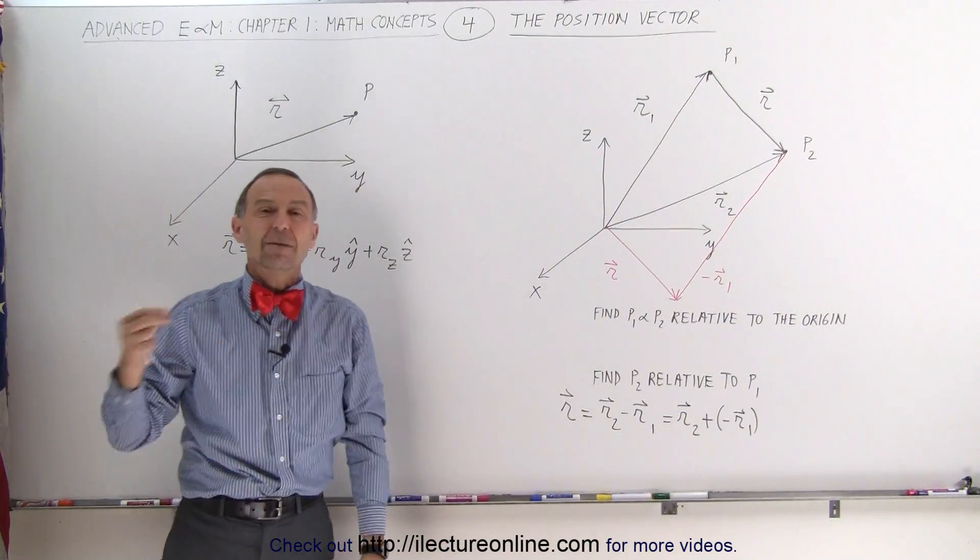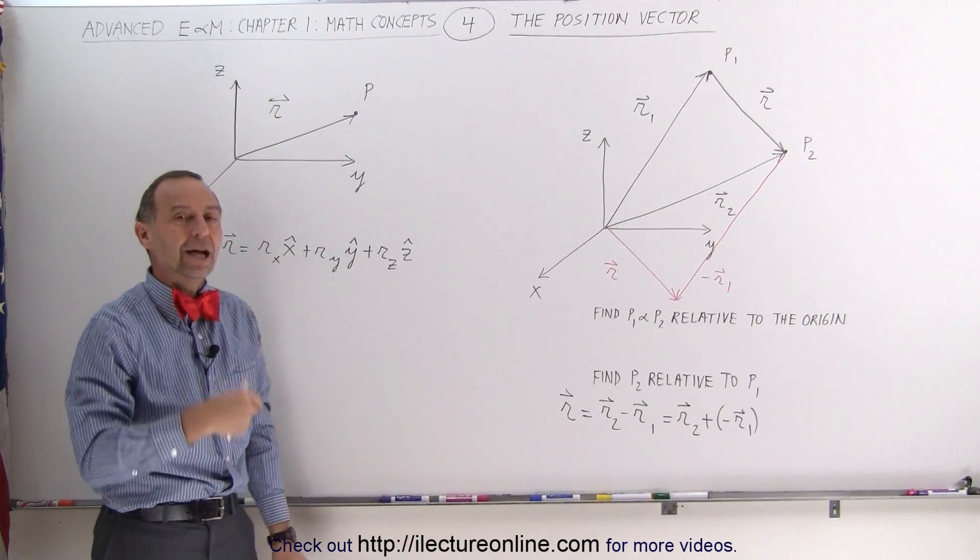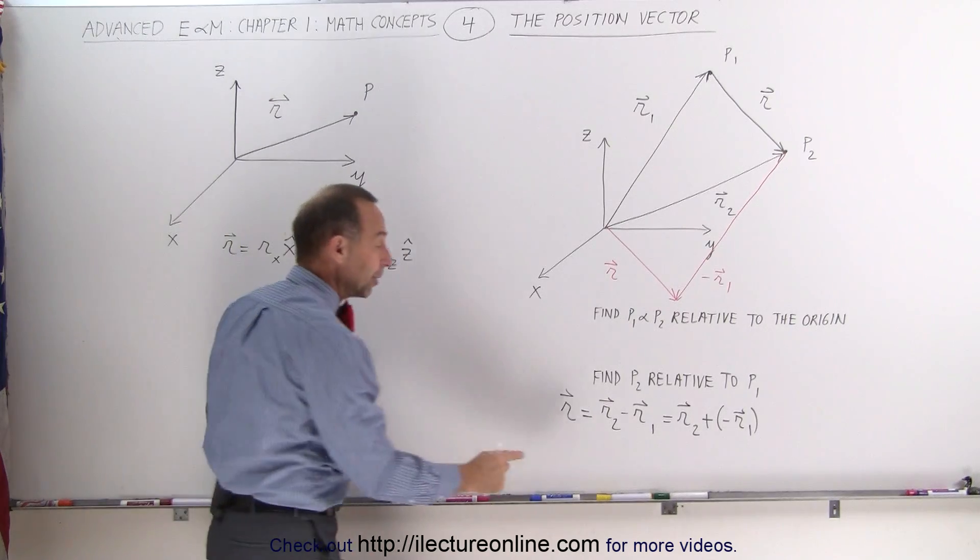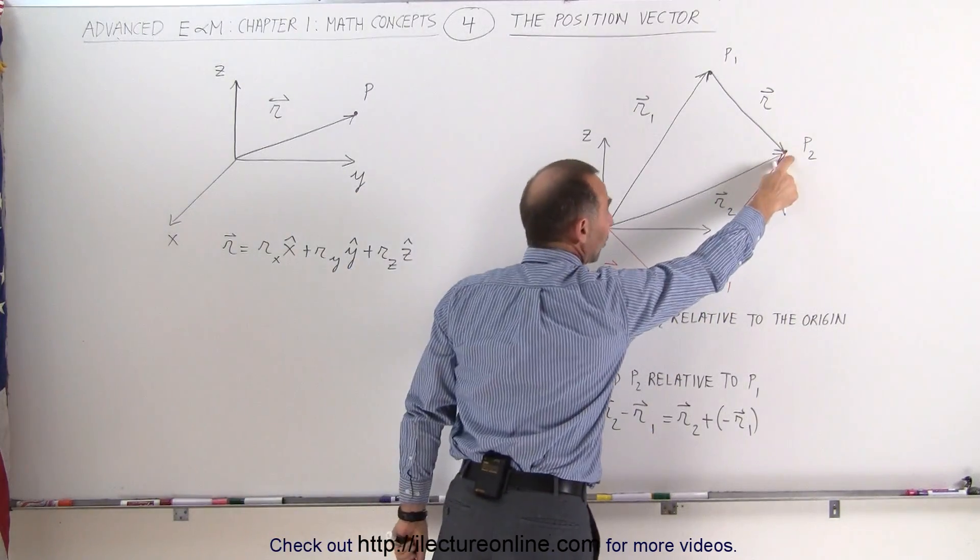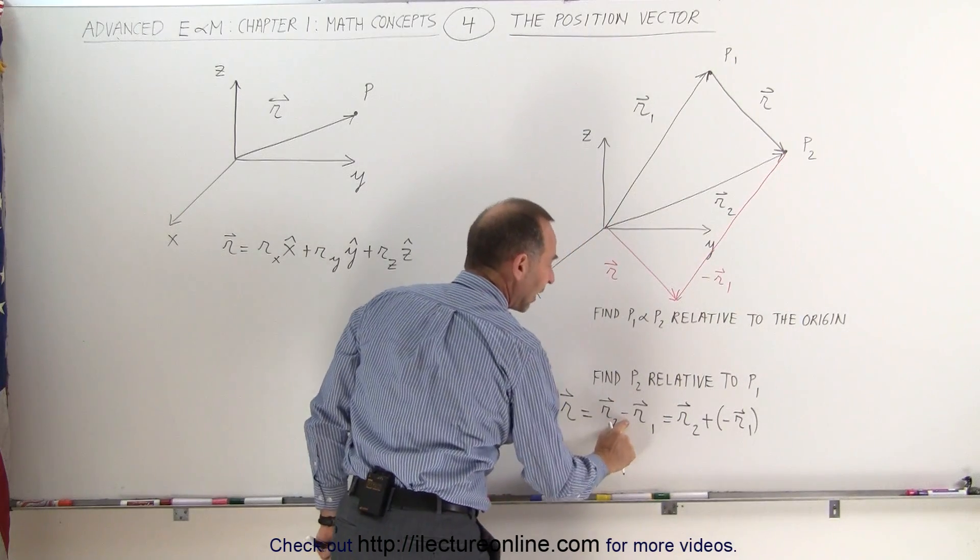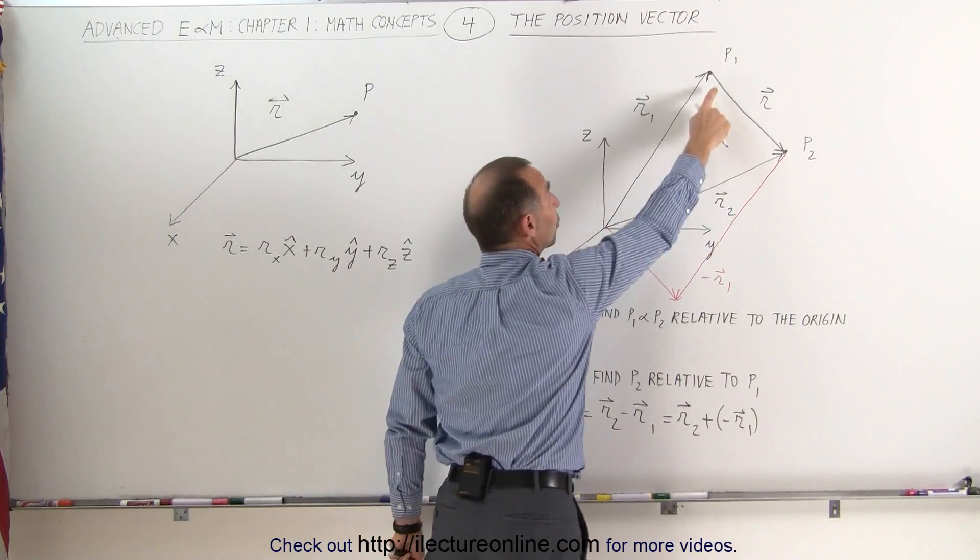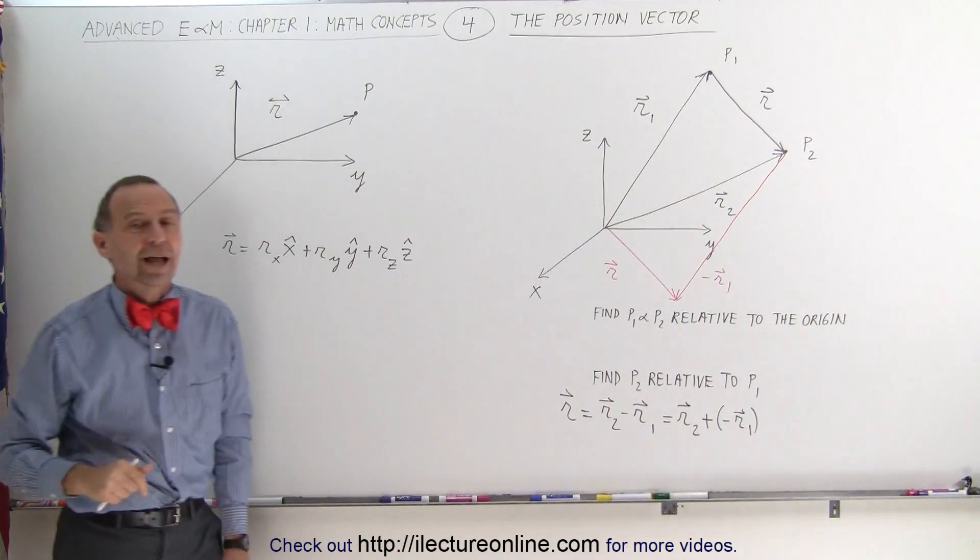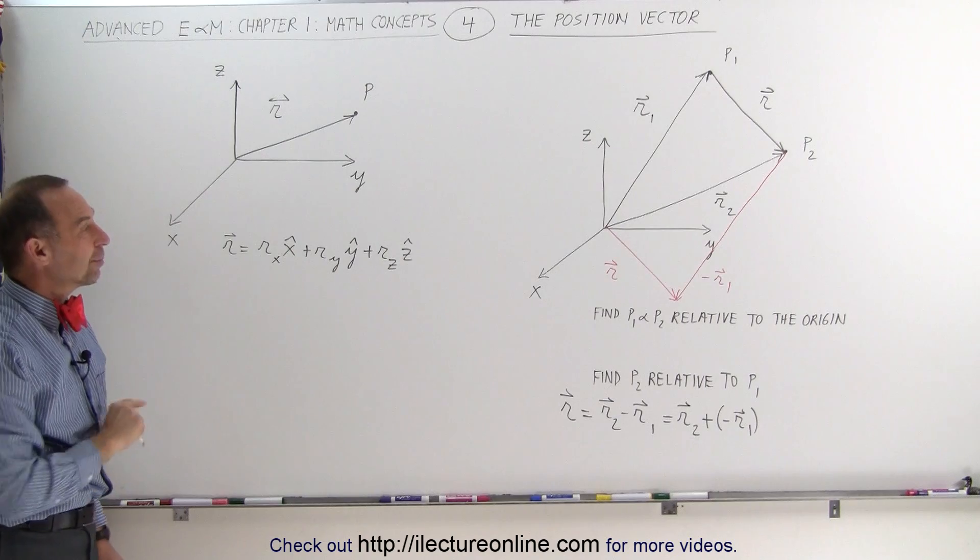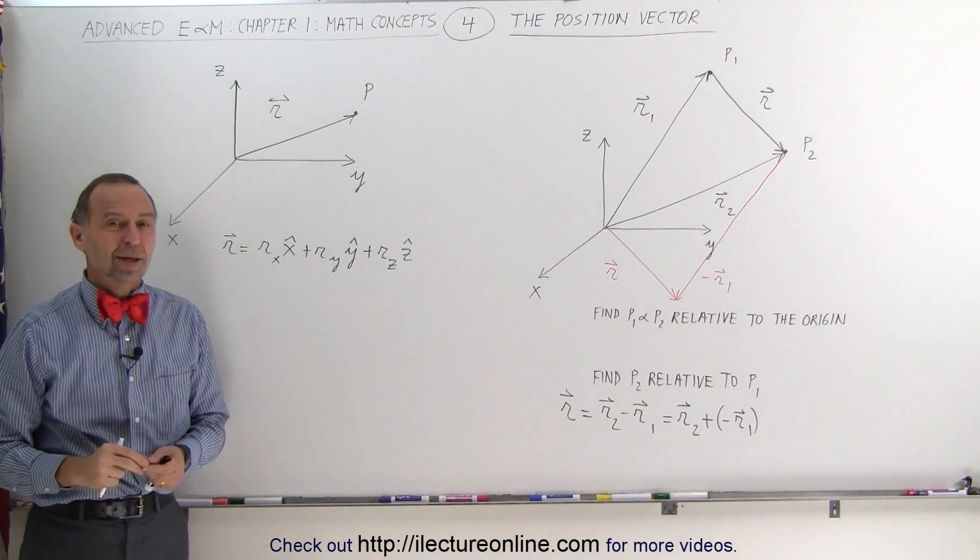That's how we find the position vector of any point in space relative to any other point in space. So remember, the vector is the point that you want to find the position of. First, subtract from that the position of the point you want to do it relative to. And that's how we find the position vector of any point in space.